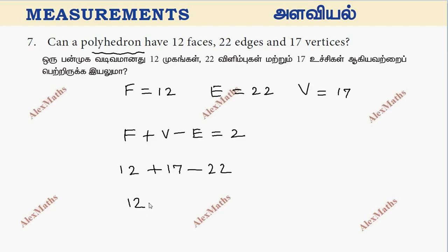After subtraction, we get 8. But we need it to equal 2 for this to be possible, so it's not equal to 2. Therefore, can a polyhedron have these values? The answer is no.